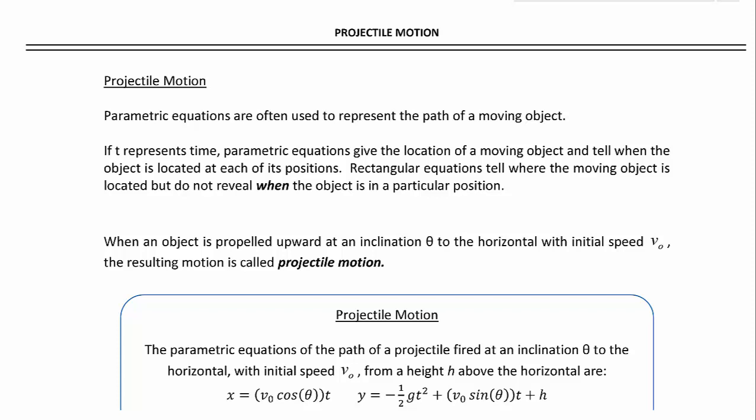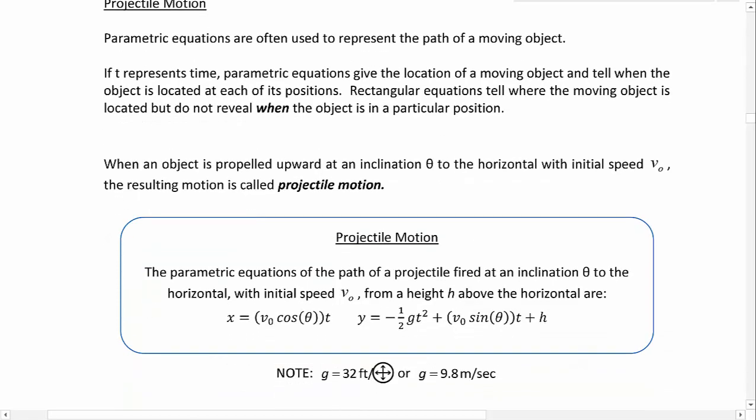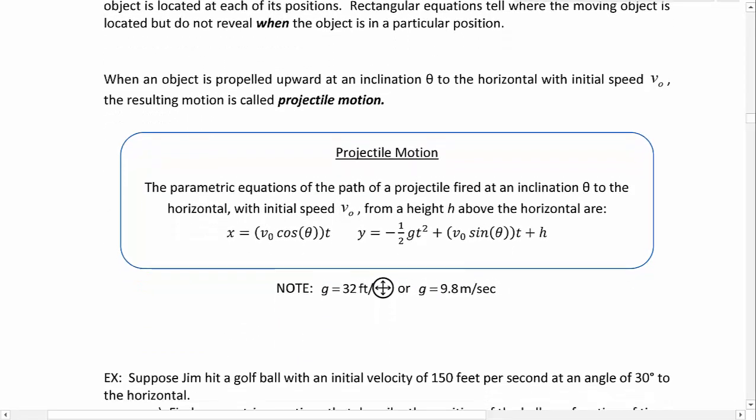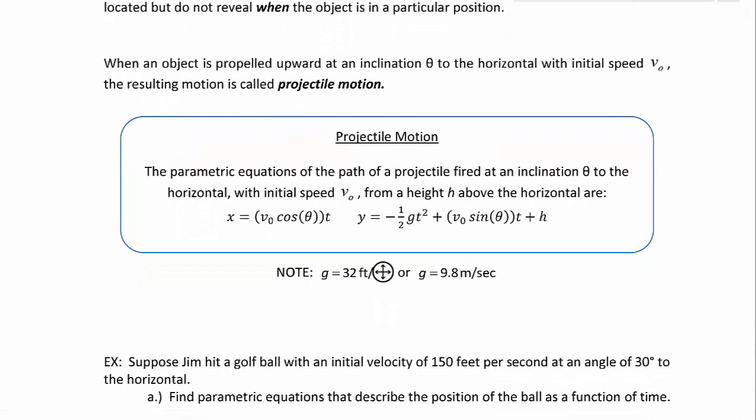Rectangular equations tell where the moving object is located but do not reveal when the object is at a particular position. That's one of the advantages to parametric equations. When an object is propelled upward at an inclination theta to the horizontal with initial speed v sub 0, the resulting motion is called projectile motion.